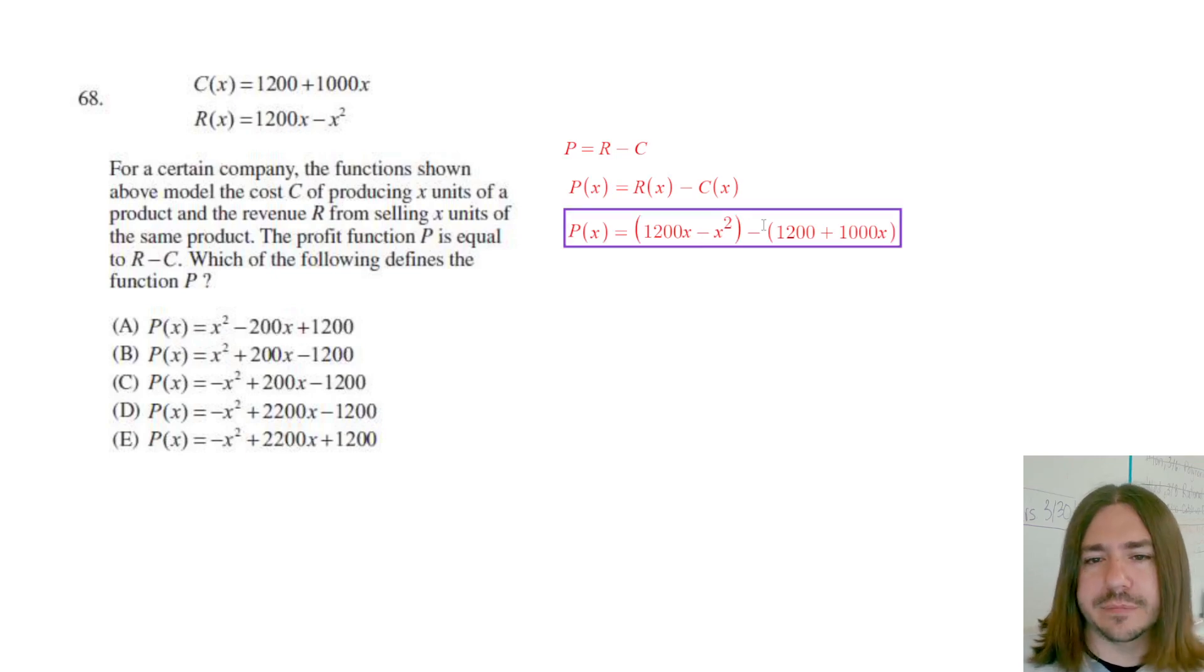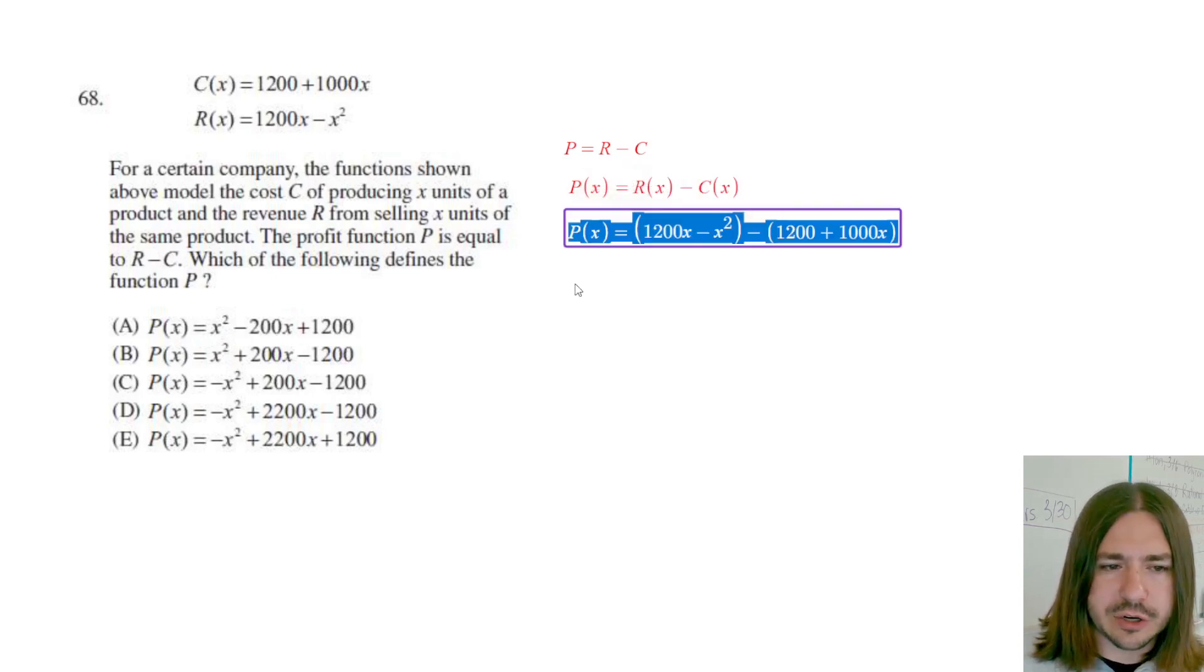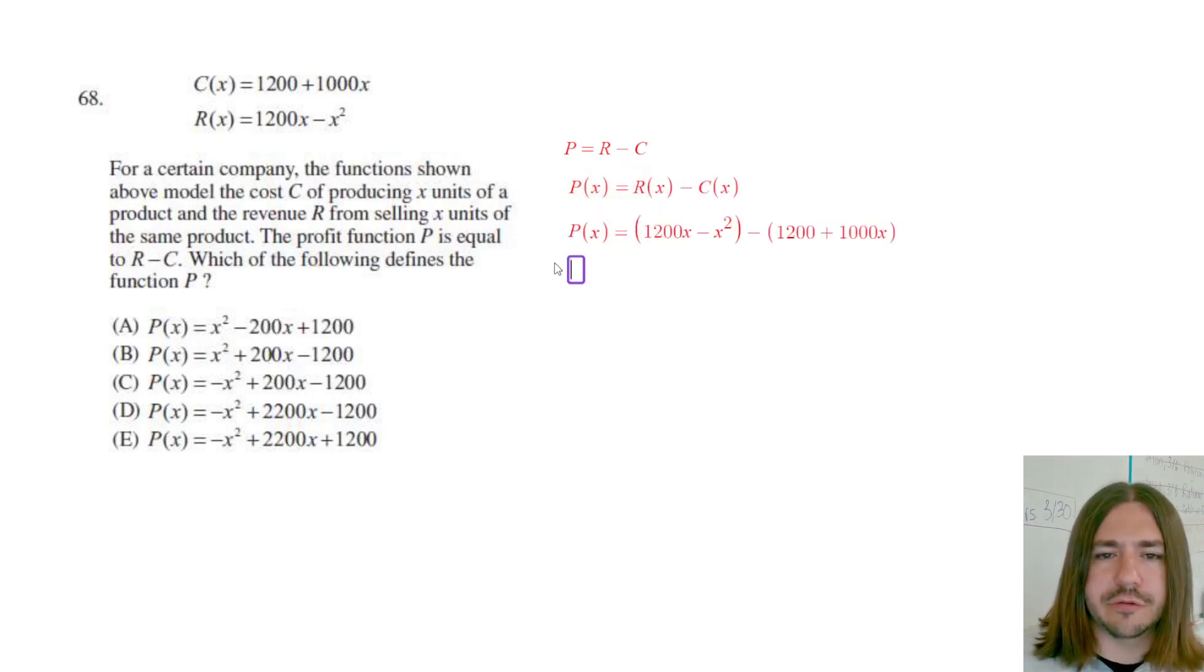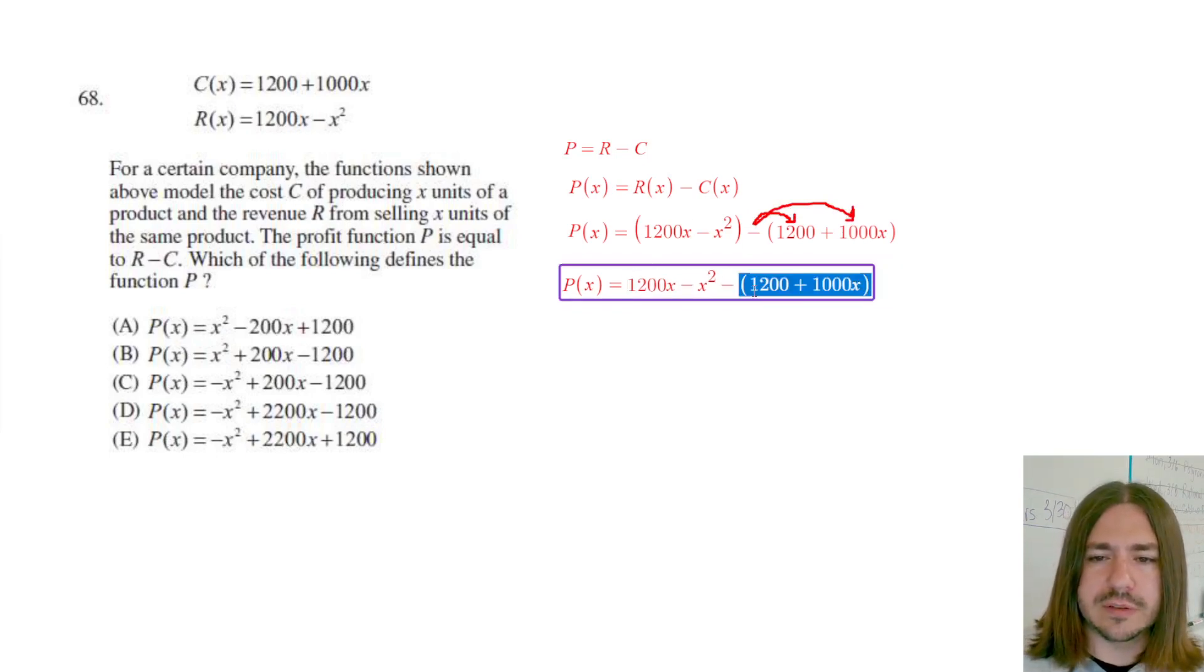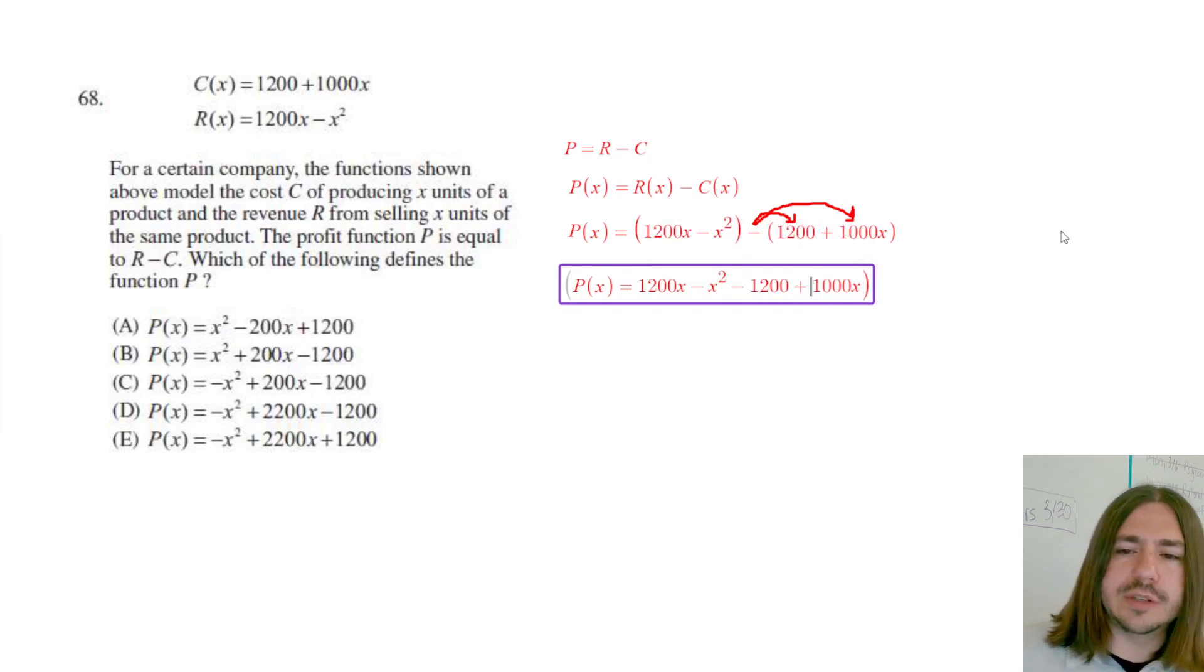And then you simplify. So what we need to do is we need to distribute the minus sign here, and then we'll combine like terms and rewrite the equation into standard form. So those are going to be our next couple of steps here. So I need to distribute this negative sign. It's kind of like multiplying by negative 1. I can drop these parentheses. So negative 1 times 1200 is negative 1200, and negative 1 times 1000X is negative 1000X.